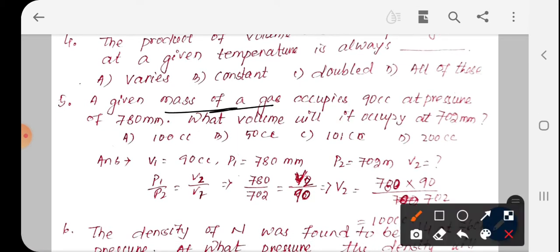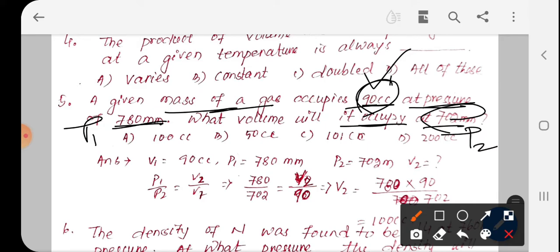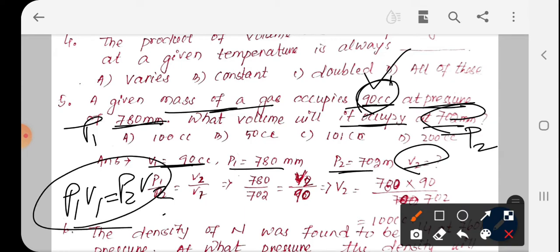A given mass of gas occupies 90 cc at a certain pressure. What volume will it occupy? We have V1, V2, P1, P2. The formula is P1 by P2 equals V2 by V1, or P1 V1 equals P2 V2. Applying this: 780 by 102 equals V2 by 90. Solving gives 150. Option A is correct.